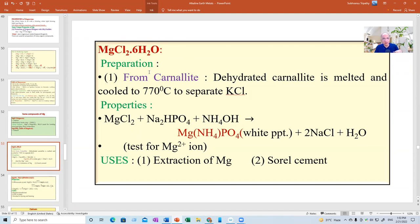And this magnesium chloride dot 6 water, you can get it from carnelite by removing KCl and again crystallizing. Remove 6 water by heating in a dry current of HCl. And then prepare a solution and crystallize, only magnesium chloride. Remove KCl, then you get hexahydrate. The dehydrated carnelite is melted and cooled. At 770, KCl separates first. So after that, you can again crystallize.